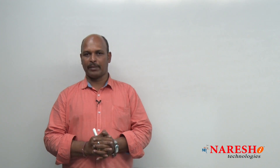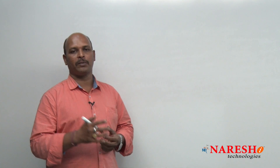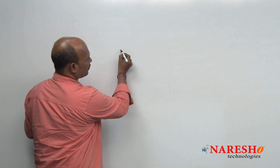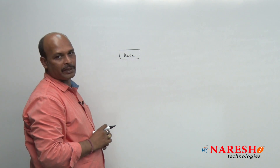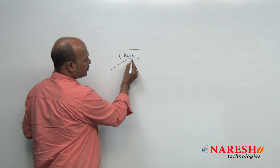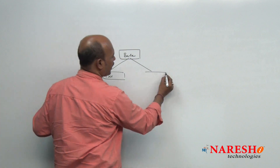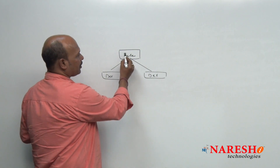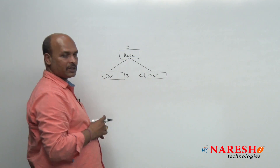In multiple inheritance, we create a class from more than one base class. In hierarchical inheritance, we create several classes from one base class. For example, assume there is a base class A, and from this base class we declare two derived classes B and C.